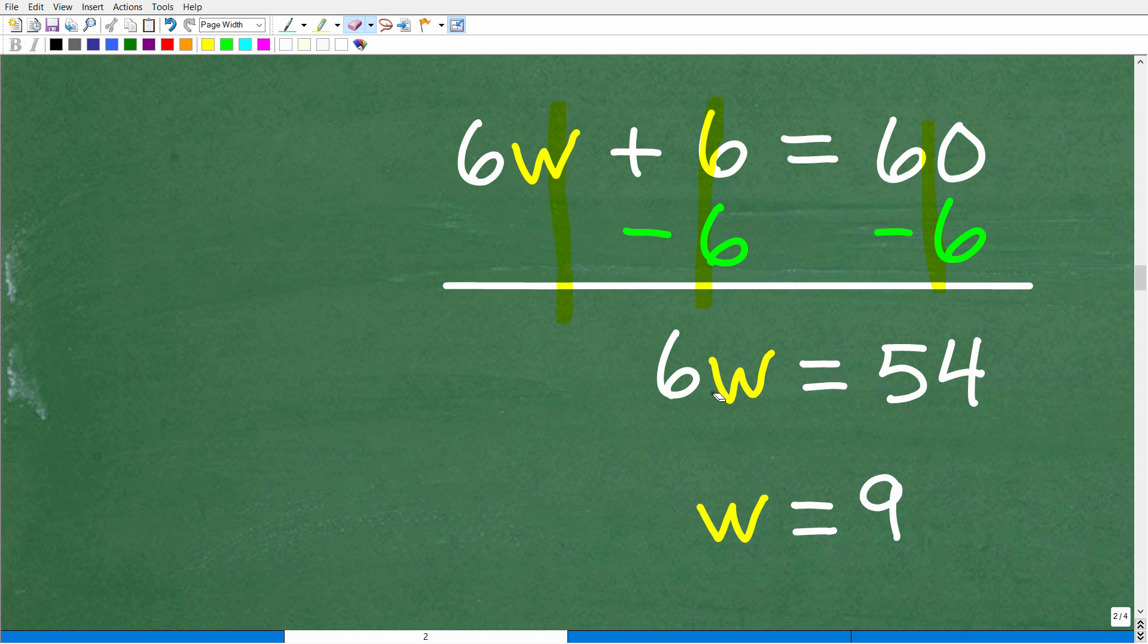Now we're down to the very last step to solve for W. We have 6W is equal to 54. So all we need to do is divide both sides of the equation by 6 and we get 6 divided by 6, which is 1 or W, and 54 divided by 6 is 9. So W is equal to 9.